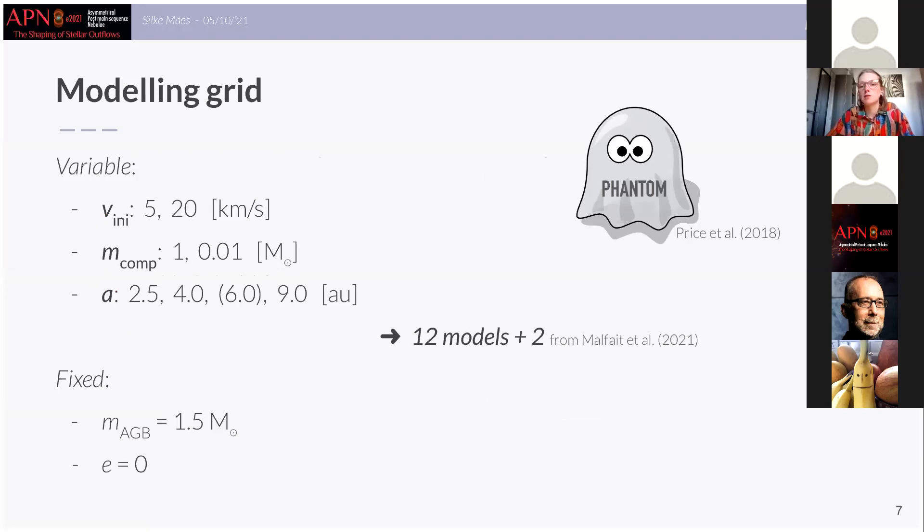In our grid of models we vary three parameters: the initial wind velocity where we switch between a fast wind and a slow wind, the companion mass between a stellar and a planetary companion, and lastly we have used four different values of binary separations and these all correspond to close binary systems. So in total this brings us to 14 models where we have employed two models of Malphe et al. 2021.